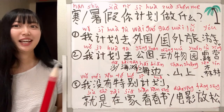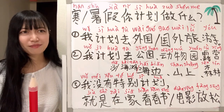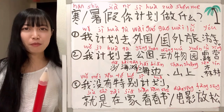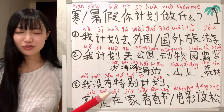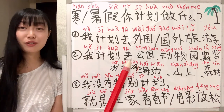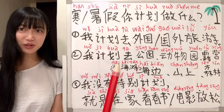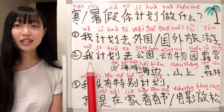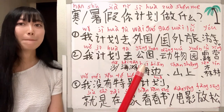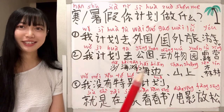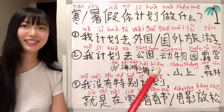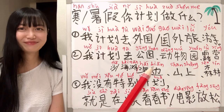Maybe sometimes we just want to go somewhere — not a formal trip, just to go somewhere. In that case we can say: 我计划去公园. 公 means 'public', 园 means 'yard', so 公园 means 'park'. I plan to go to the park: 我计划去公园.